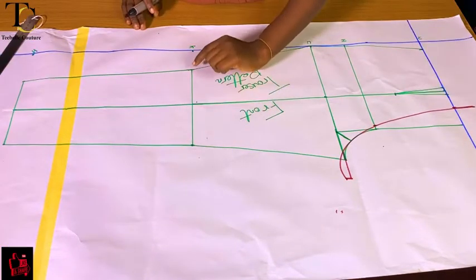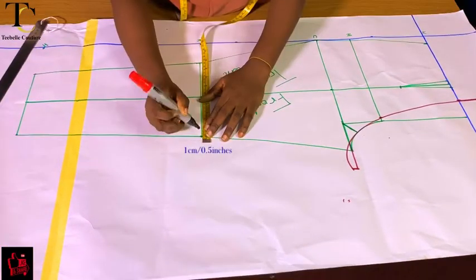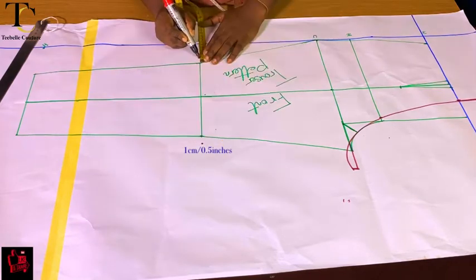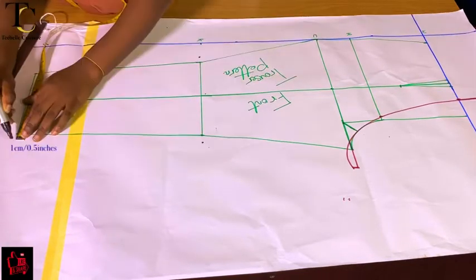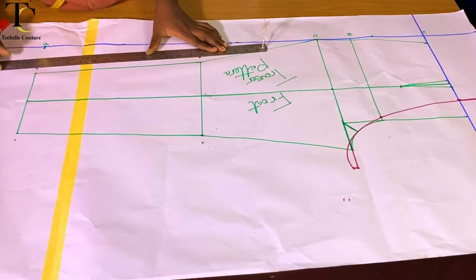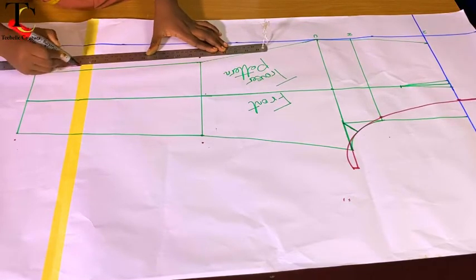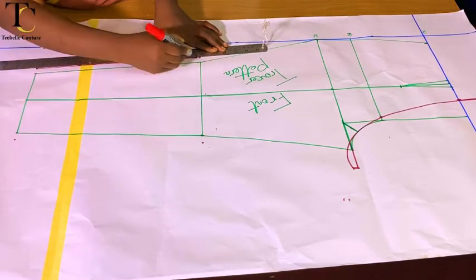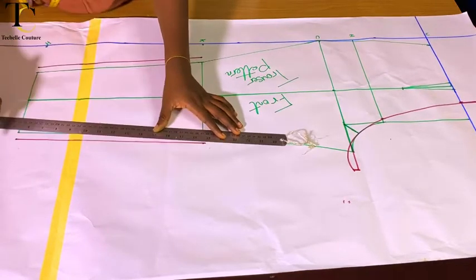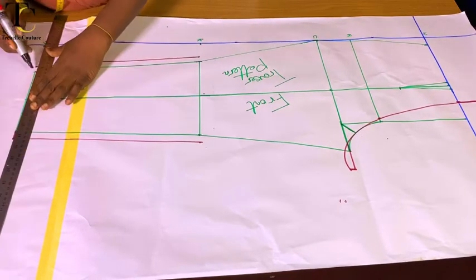The next thing I'm going to do is to come out at the knee by one centimeter each for the knee and for the hem or ankle line — you can use 0.5 inches for the back trouser. Then I'll connect my ankle to my knee.